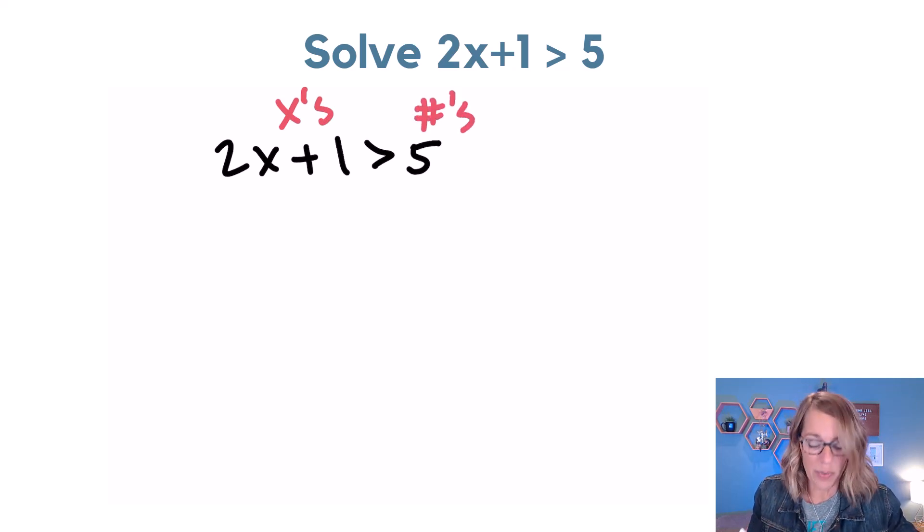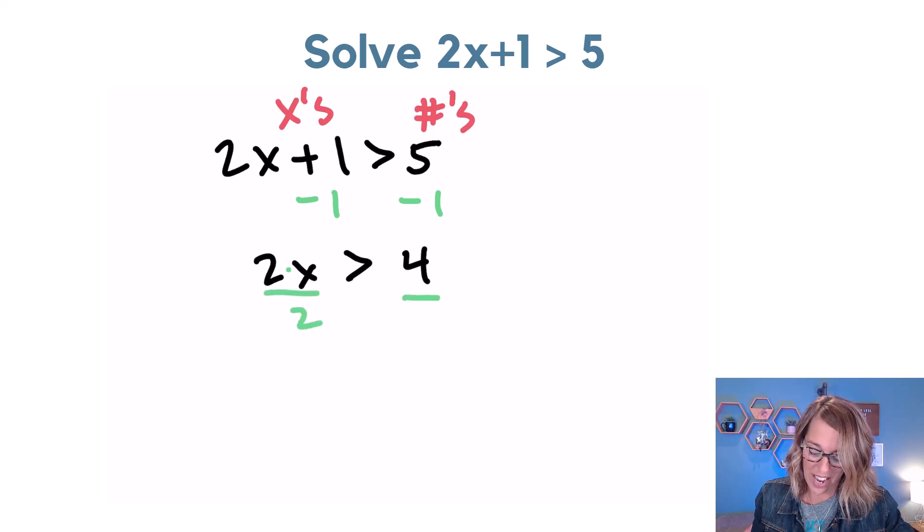So I can leave the 2x where it is, but I need to subtract the 1 from both sides. That's going to give me 2x. The 1s go away and I've got 5 minus 1, which is 4 on the other side. Now I've got 2 times x, so we're going to divide both sides by 2, and we get x is greater than 2.